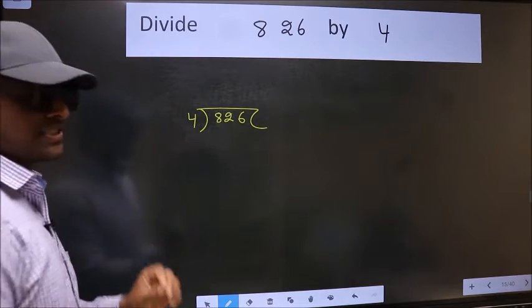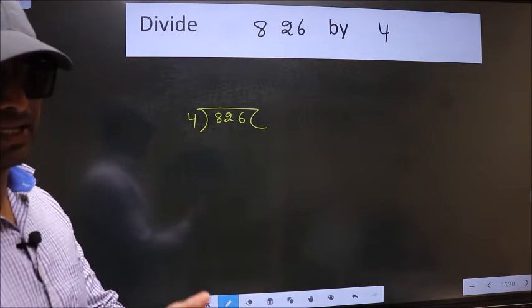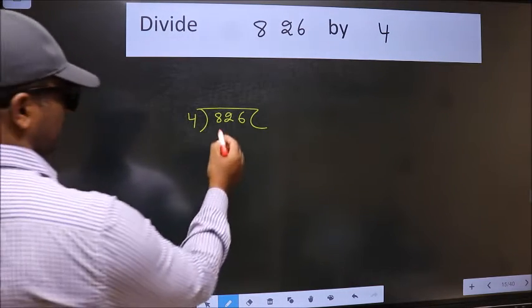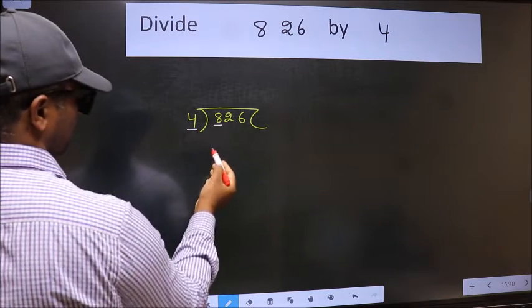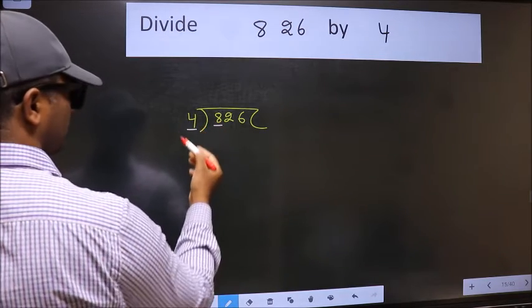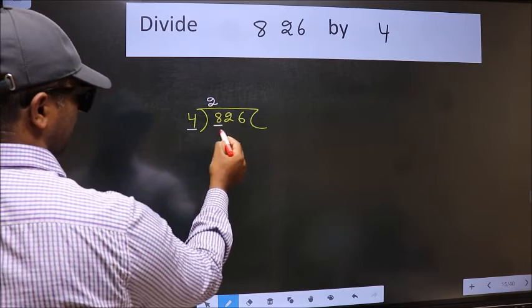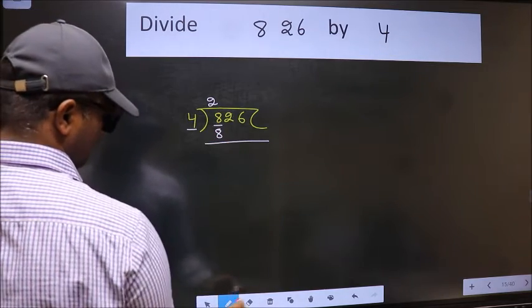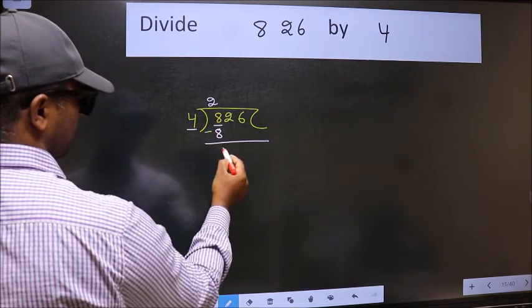This is your step 1. Next, here we have 8 and here 4. When do we get 8 in the 4 table? 4 times 2 is 8. Now we should subtract. We get 0.